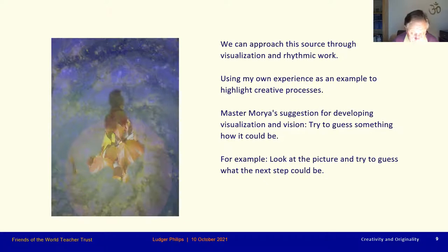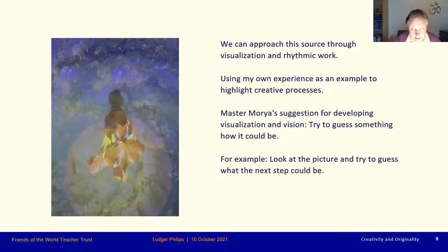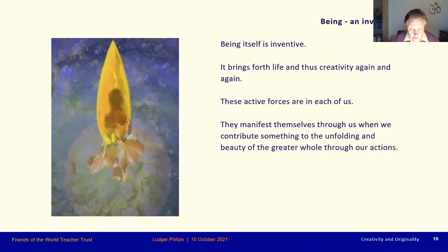Visualizing and rhythmic working are the core elements in being able to receive impulses for creative work from this source. Friends told me they could not visualize anything and did not know how to visualize. Master Maria suggests that if we can't imagine anything, we can at least try to guess what it might be like. We can slowly develop visualization, and from visualization, we then develop vision. When we attempt to imagine something we can't yet see, we are actually training our thinking.